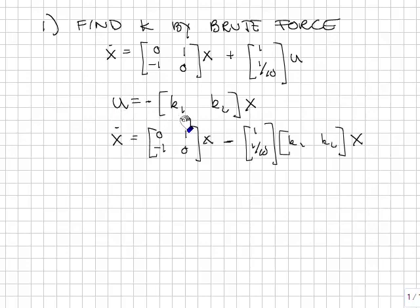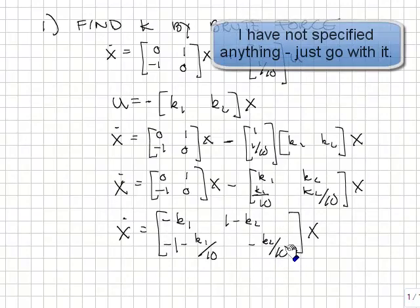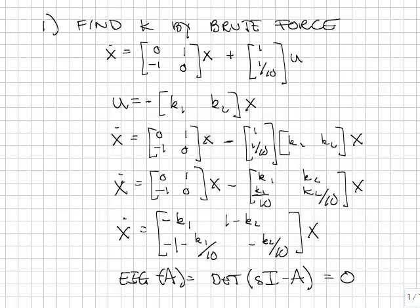Substituting u equals minus kx for u, I have this equation. And completing the algebra, I end up with this for the states. x dot is equal to a x. I want the eigenvalues of this system to be at my specified location. Well, follow through with the brute force. Let's find the eigenvalues of this by definition. We can find the eigenvalues of matrix by finding the values of s where the determinant of sI minus A is equal to zero.